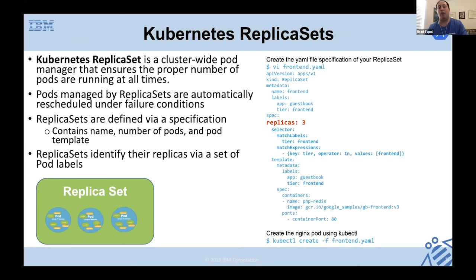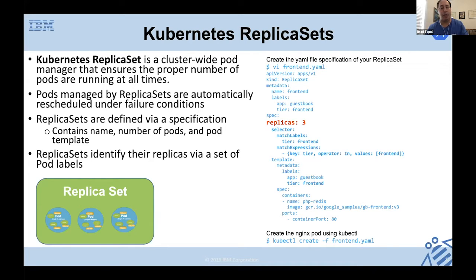Kubernetes gives you way more than basic features. A key feature is running more than one copy of a pod — there's a resource type called a Replica Set. The Replica Set is a controller or pod manager that ensures the proper number of pods are always running. If any crash, the Replica Set controller recognizes this and starts new ones — they may end up on a different server. In this example we want three replicas, and if one or two go down, it'll start them back up.